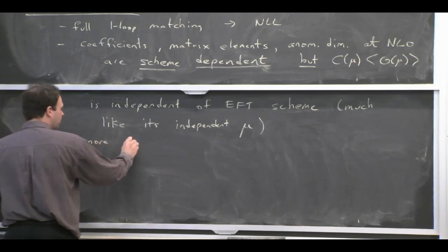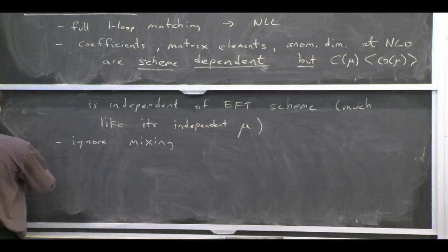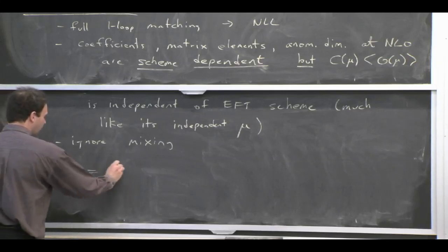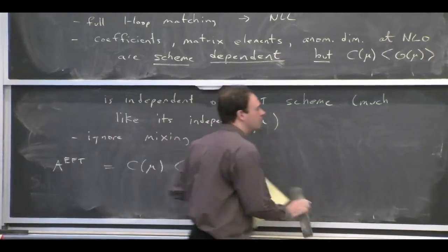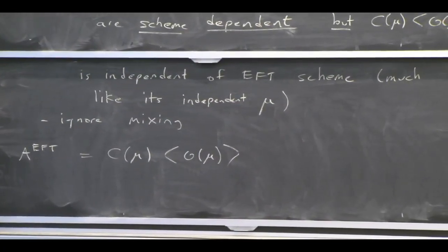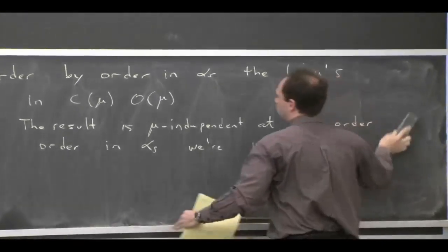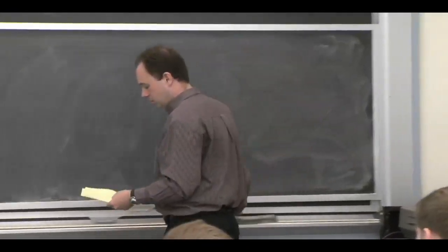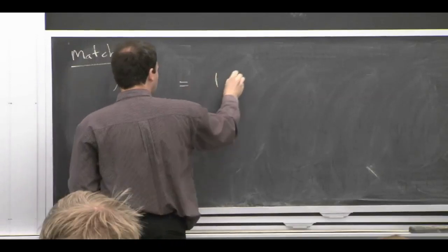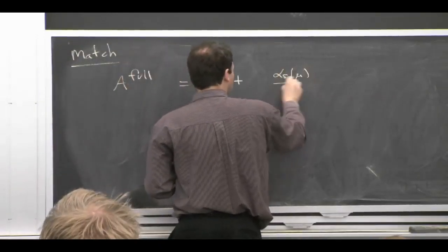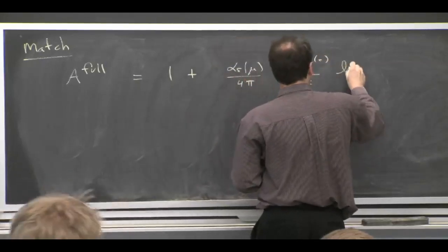For the context of this discussion, I'm going to start dropping all the matrix indices — I'm not going to write i and j — just to keep things a little bit simple. So we'll write that the effective theory is simply one coefficient times the matrix element of one operator. Let me introduce some notation for the results.